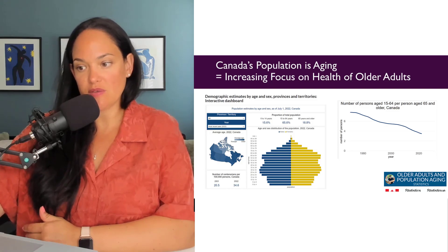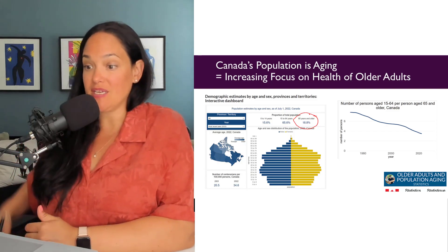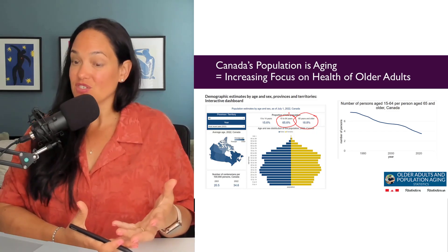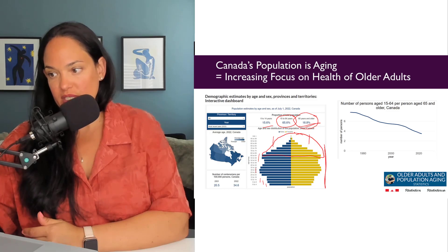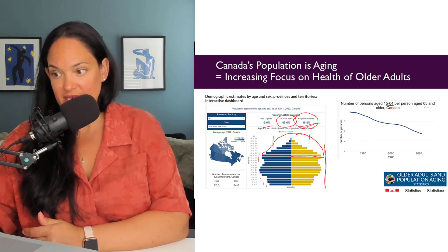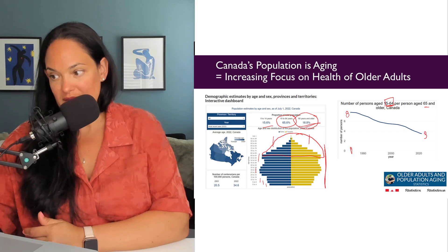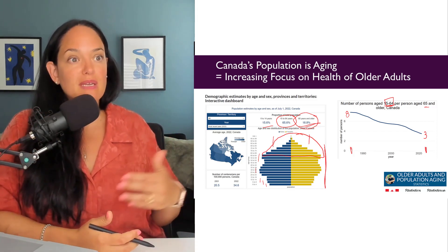Another good reason for focusing on this group is that there are so many of them. As of 2022, almost one in five Canadians is 65 and older. Only about 60% of the population is working age to support this older population. Back in the 1970s there were about eight people aged 15 to 64 for every one person over 65; right now it's about three people in that age group for every one person 65 and older.